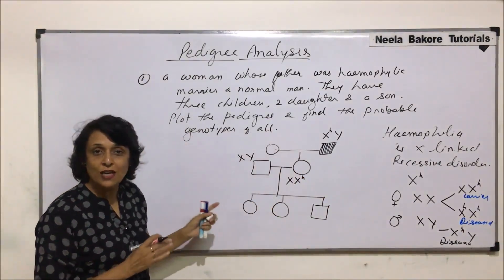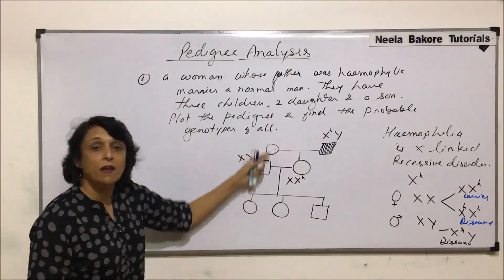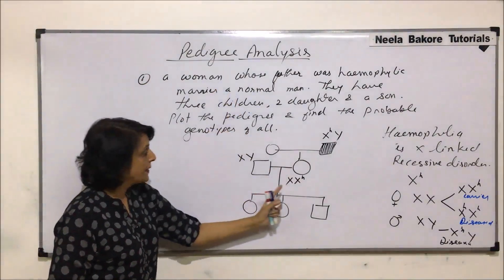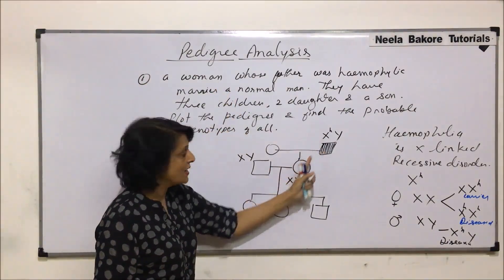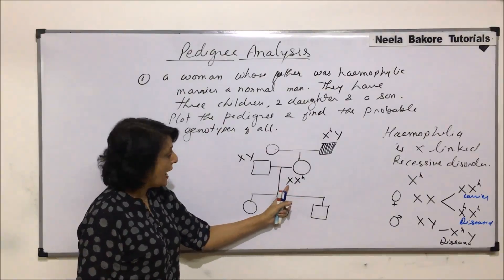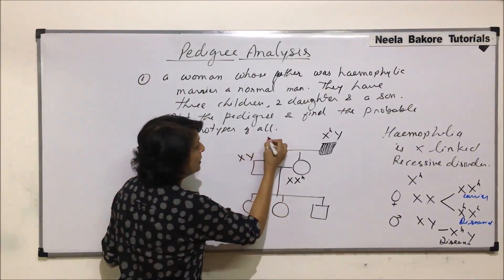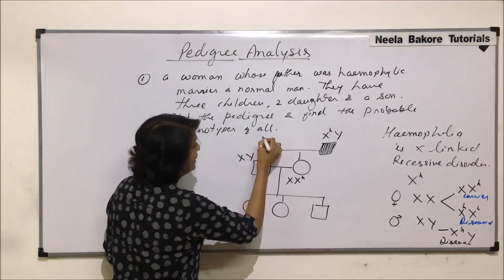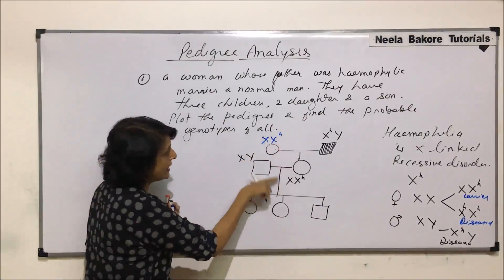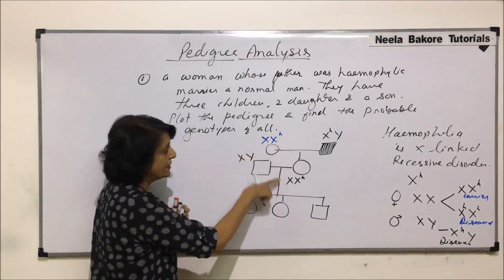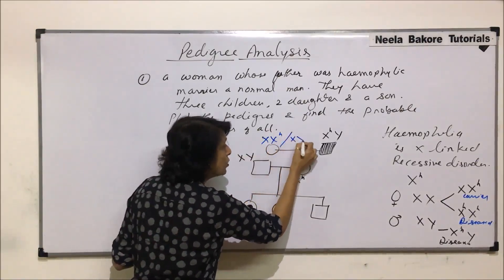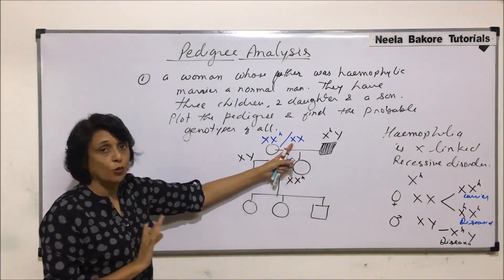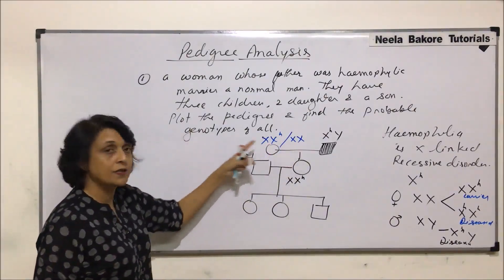Now we need to find the genotypes of all individuals. The proband received one recessive X^h from her father and one normal X from her mother. Her mother could therefore be a carrier — giving the normal dominant X to her daughter — or completely normal with both X chromosomes carrying the dominant gene. Both possibilities exist.